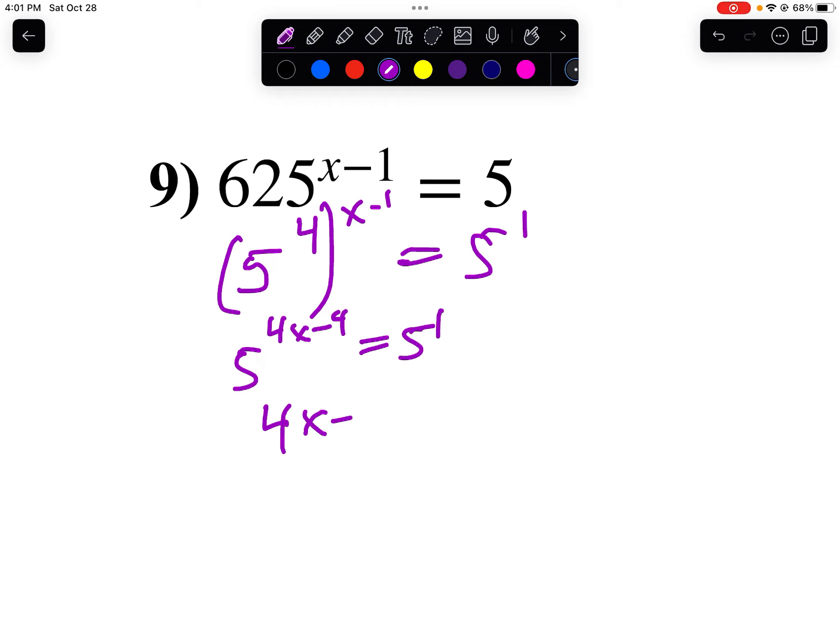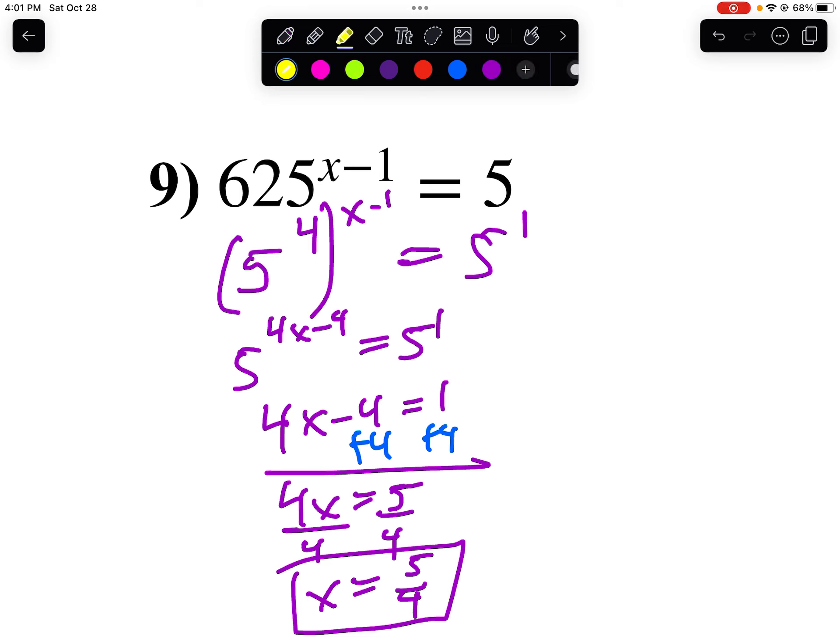My bases are the same. So 4x minus 4 equals 1. We'll add 4 to both sides. We get 4x equals 5. I'll divide by 4. So x is 5 over 4. Write your answer as a fraction. I don't want 1.25.